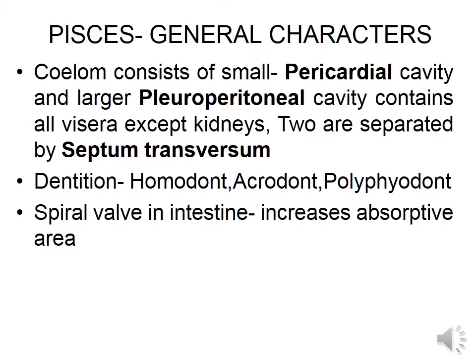Dentition is homodont — all teeth are equal in size. They are found within the socket and hence known as acrodont. They are of equal and similar type. Polyphyodont: whenever a tooth breaks, a new tooth appears. This condition is known as polyphyodont. A spiral valve is seen in the intestine that increases the absorptive area, mainly seen in Chondrichthyes forms.